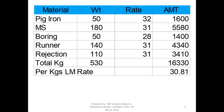In the second case, we have introduced boring at 50 kg, and rejection and runner riser together at 250 kg. We are keeping pig iron and MS scrap constant and working on boring, runner riser, and rejection alone. With boring at 50 kg and runner riser plus rejection at 250 kg, the cost comes to around 30 rupees 81 paisa.